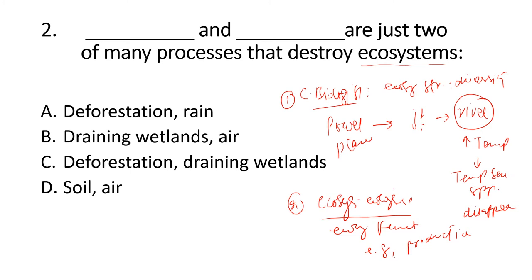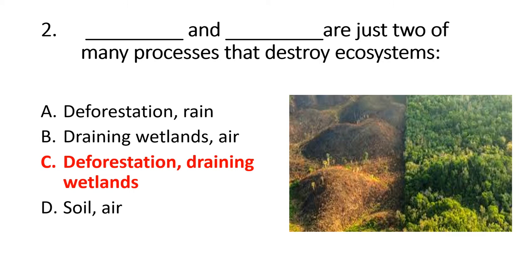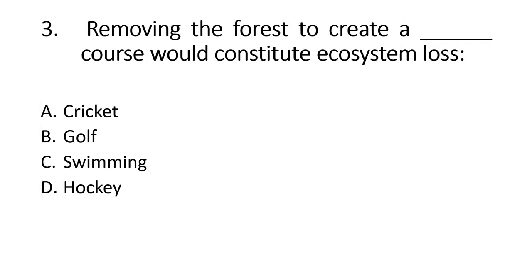Question 3: Removing the forest to create a blank would constitute ecosystem loss. First, look at the answer. For example, a city which is at the edge of a forest park. At the edge of the forest, there are some old trees that are randomly removed.